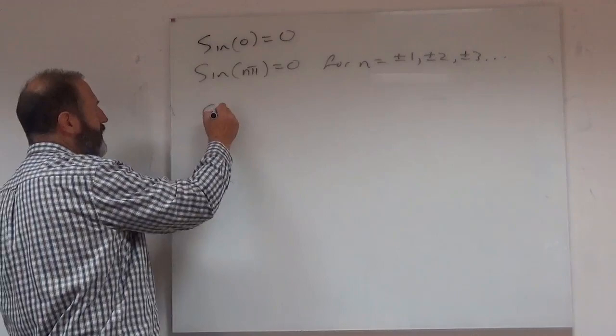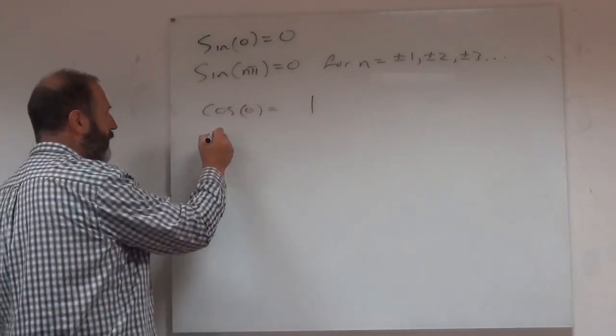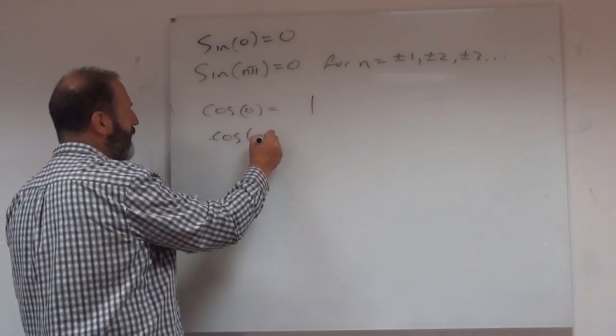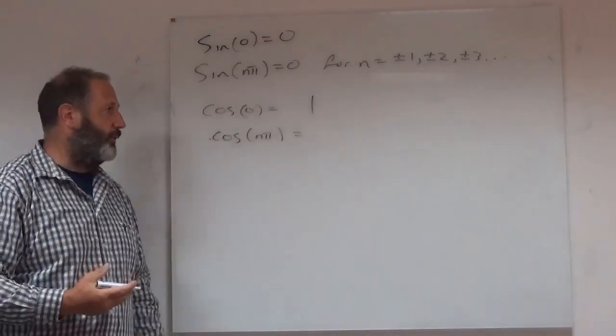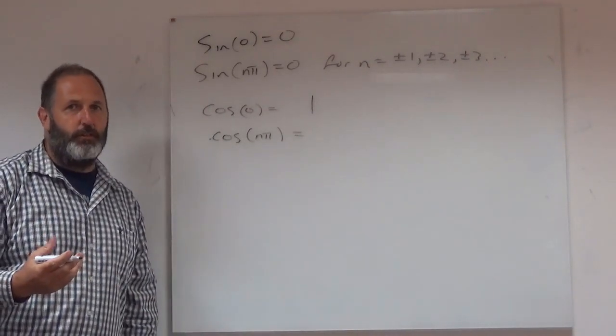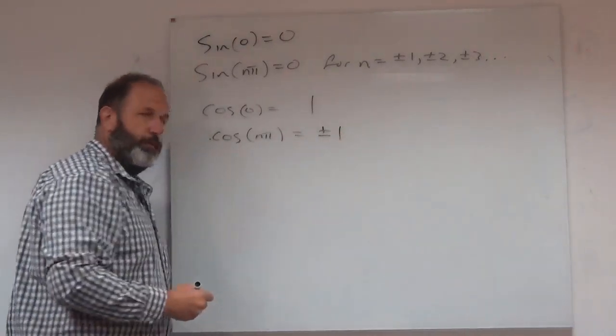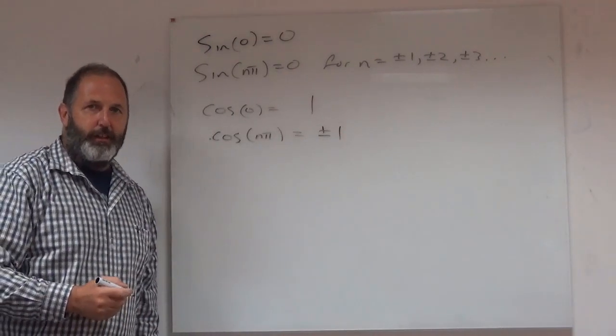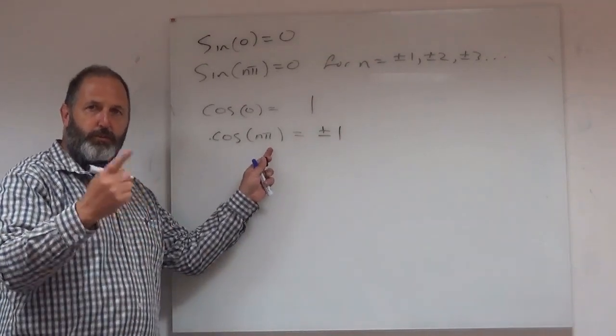What about cosine? Cosine of 0 is 1. Cosine of nπ, well, picture the sketch that you saw a moment ago. Cosine of nπ can take on two values, but only two values. It could be a plus 1, or it could be a minus 1. Nothing else. As long as n is an integer. So n could be 1, 2, 3, 4, etc.